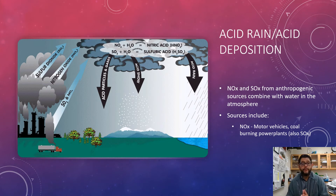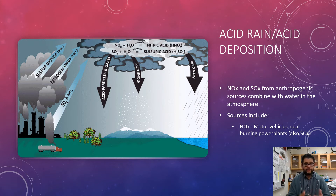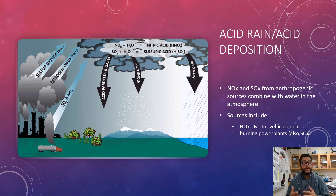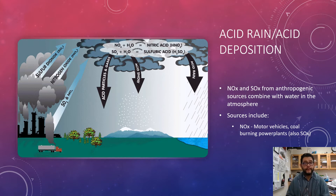For acid rain, remember we've talked about sources of air pollutants, the different things that end up in the atmosphere — the sulfur dioxides, the NOx chemicals. What happens with those is they become primary pollutants, and those end up mixing with water in the atmosphere, and that ends up forming acid rain.